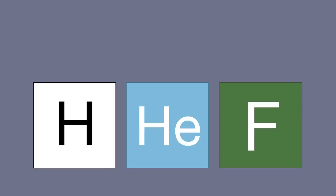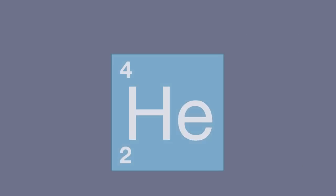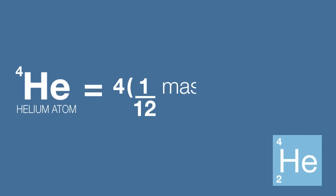Every atom has its own unique atomic mass, based on this relative scale. Our earlier example of helium had an atomic mass of four. In full, this means that the helium atom has a mass of four times one-twelfth of the mass of a carbon-12 atom. Of course, it's far easier to write this as four.